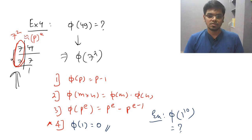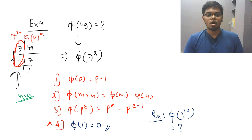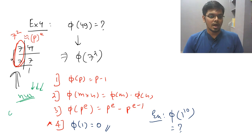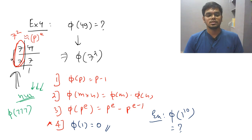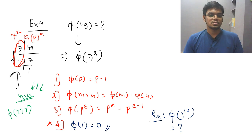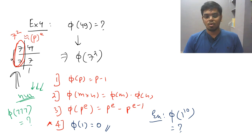There is one homework question for you. Do comment the answer. You have to find phi of 777. Let me know in the comment section what the answer should be.